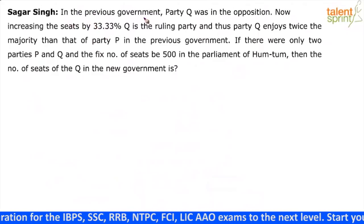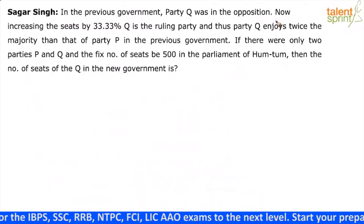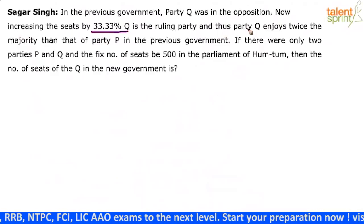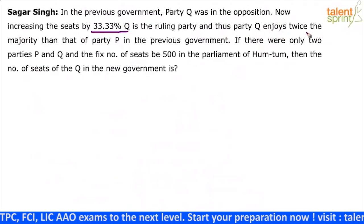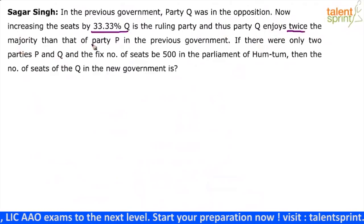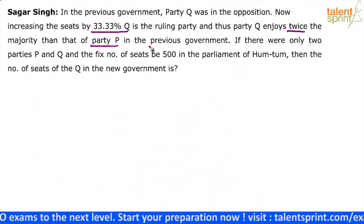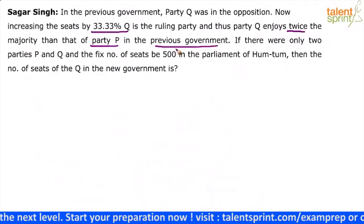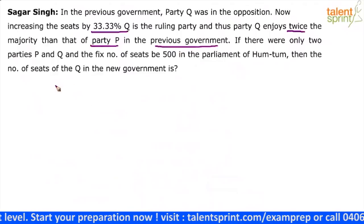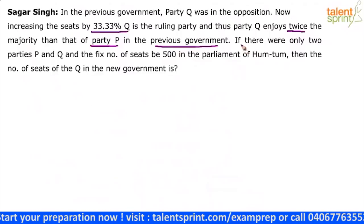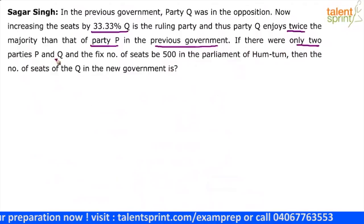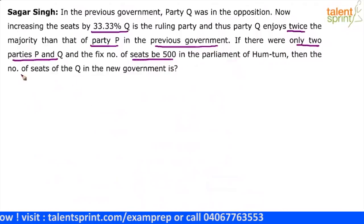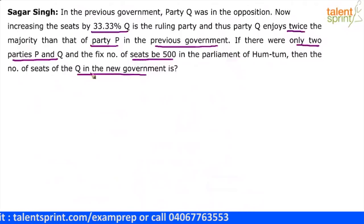In the previous government, party Q was in the opposition. Now increasing the seats by 33%, Q is the ruling party and thus this ruling party enjoys twice the majority that party P had enjoyed in the previous government. We are talking about two instances. There were only two parties P and Q and the total number of seats are 51 in the parliament of Hamtum. We have to find out the number of seats of Q in the new government.